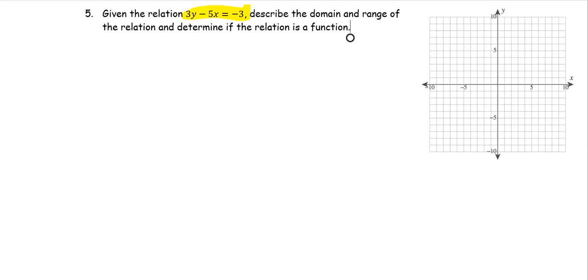When we look at this equation, 3y minus 5x equals negative 3, this is a linear equation. So we can rewrite it in the form of the line y equals mx plus b. 3y equals 5x minus 3 divided all by 3 becomes y equals 5 over 3 times x minus 1. The m is 5 over 3, the b is negative 1.